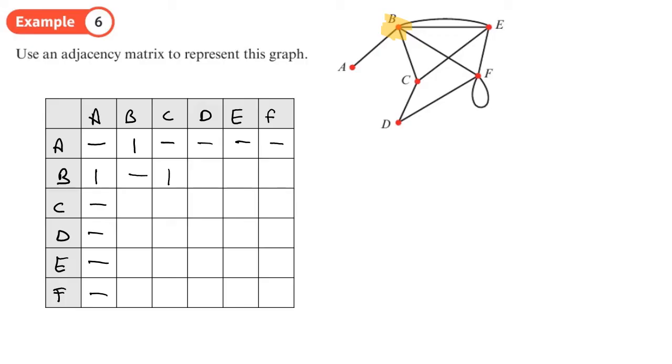We'll now move on to edge B. So we've already filled in the one that's between A and B already. There's nothing between B and itself. Between B and C there's one. Between B and D there's none. Between B and E there are two edges between B and E, you see these ones, the curved one and the straight one. And between B and F there's one.